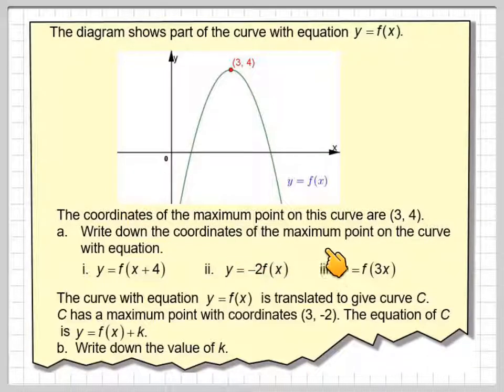Write down the coordinates of the maximum point on the curve with equation y equals f of x plus 4, y equals minus 2f of x, and y equals f of 3x. The curve with equation y equals f of x is translated to give curve C. C has a maximum point with coordinates (3, -2). The equation of C is y equals f of x plus k. Write down the value of k.